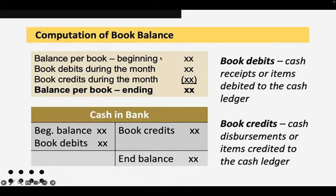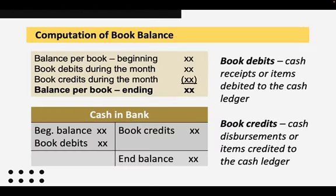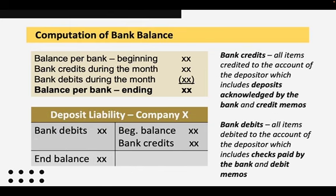Whenever there is an increase in our bank balance, that is called a bank credit. On the other hand, bank debits are items that decrease our bank balance — these are checks paid by the bank and debit memos. Debit memos include NSF checks, bank service charges, interest expense, or automatic loan payments. So: beginning bank balance plus bank credits minus bank debits gives you the ending bank balance for the current month.